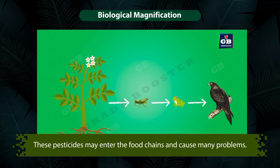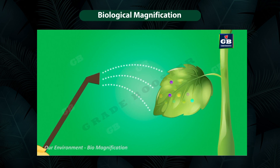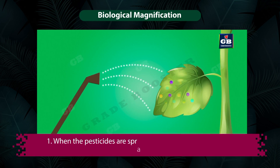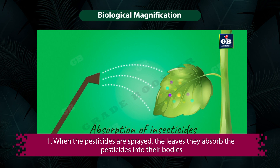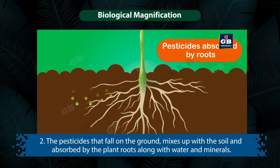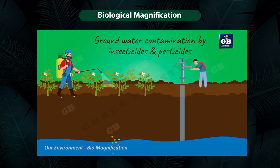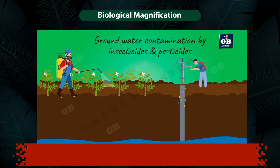Now let us see how these poisonous chemicals enter the food chains. The pesticides enter the plant bodies in two ways. One: when the pesticides are sprayed, the leaves absorb the pesticides into the bodies of the plant. Two: the pesticides that fall on the ground mix up with the soil and are absorbed by the plant roots along with water and minerals.